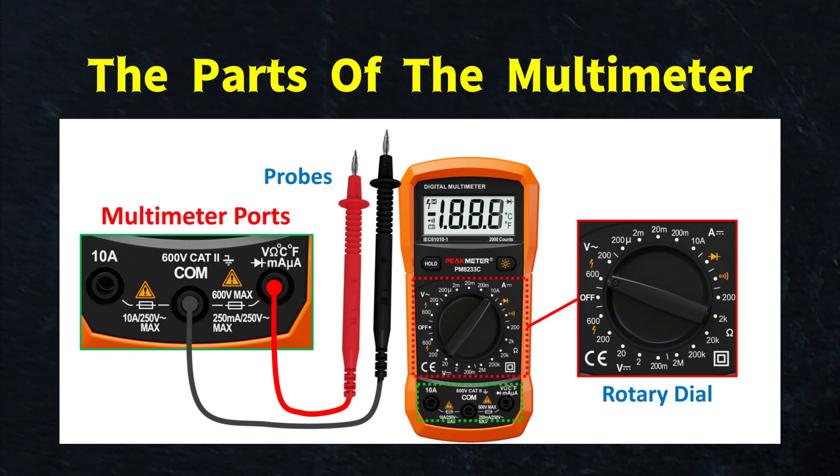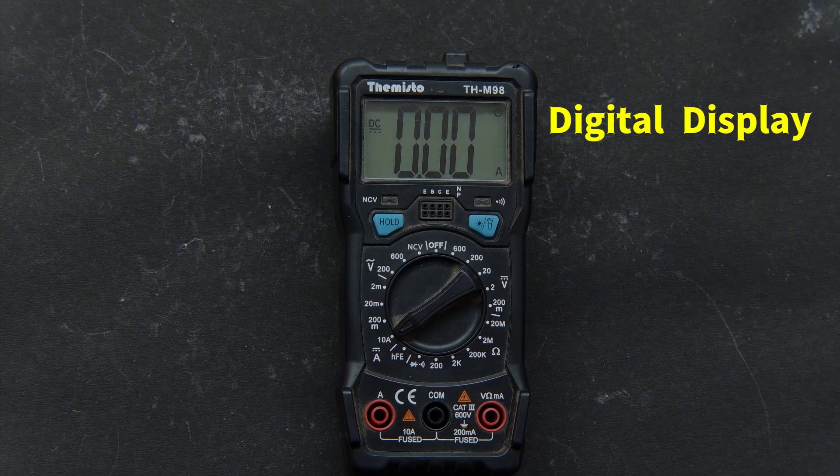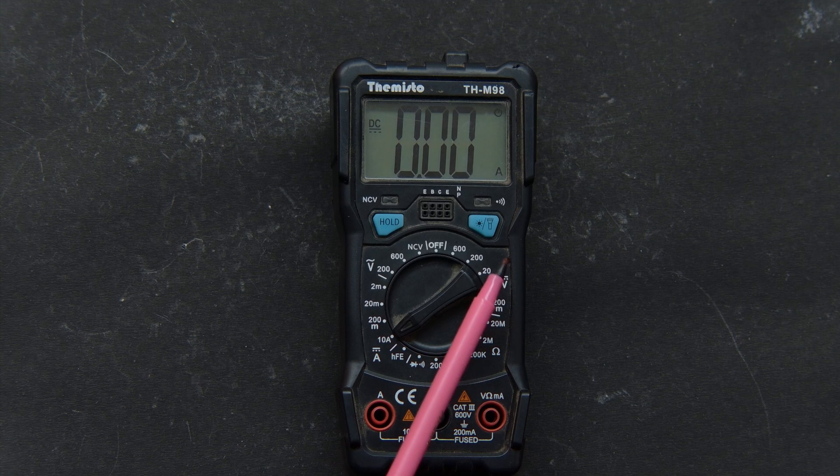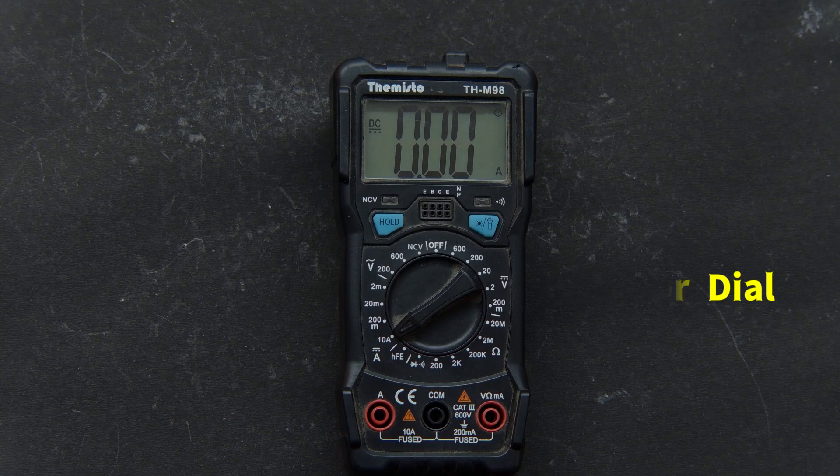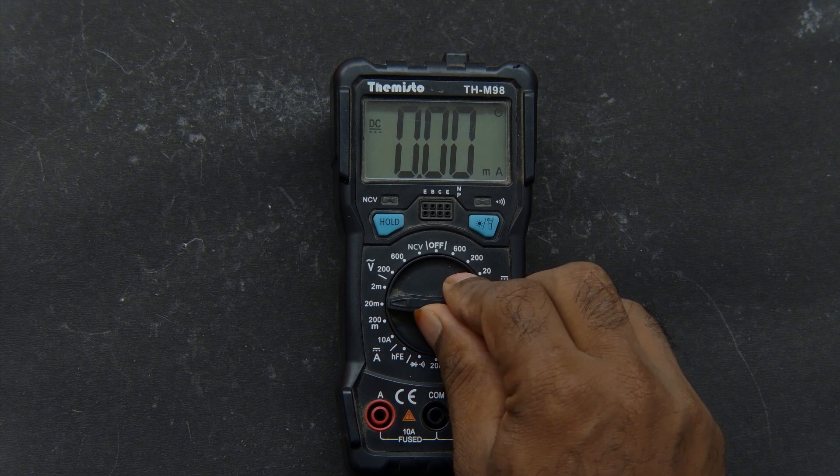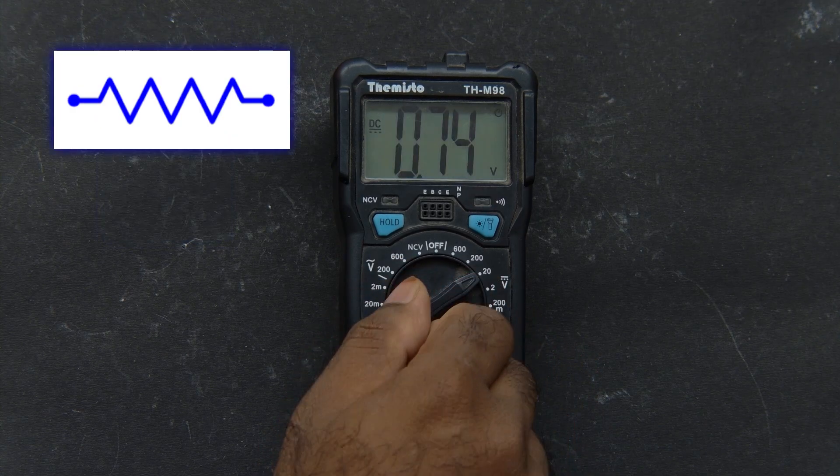Now, before we start testing anything, we need to understand the parts of the multimeter. At the top, we have the digital display. This is where all your measurements appear. In the center, you will find the selector dial. This is the most important part. It allows you to choose what you are measuring, whether it's AC voltage, DC voltage, resistance, or something else.